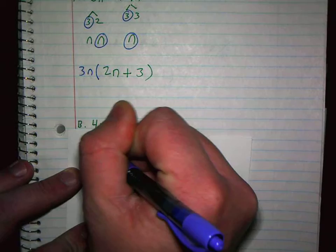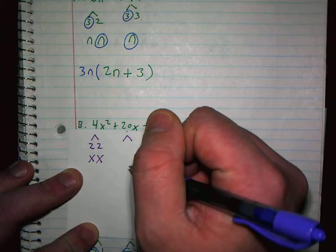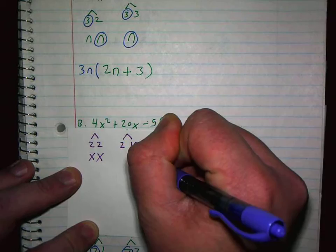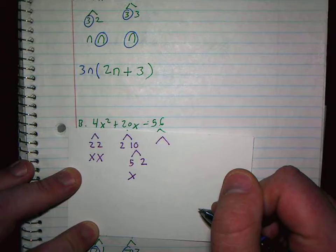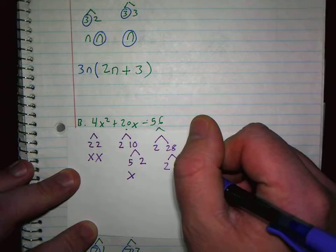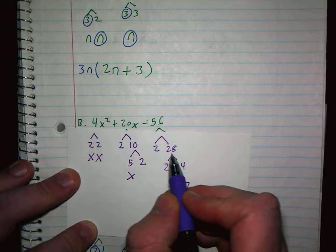But 4 breaks into 2 and 2. X and X for X squared. 20. How can I break 20? 2 and 10. But I could break 10 up into 5 and 2. And then an X. And then 56. 2 and 28. It's even, so 2 goes into it. I know that. 2 and 14. Yes. And then 2 and 7.